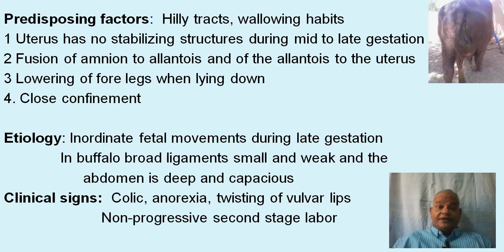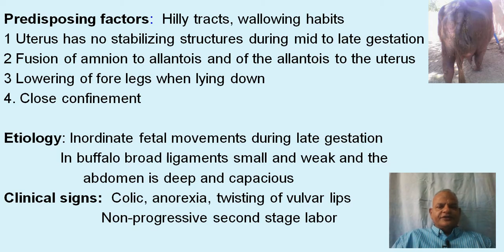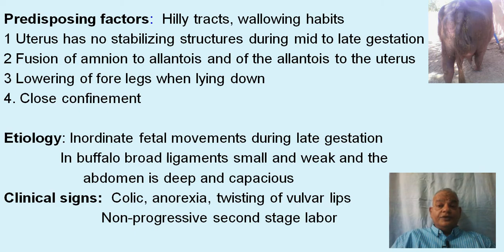The predisposing factors for uterine torsion include heavy drafts, the wallowing habits of the buffalo, and anatomy. The uterus has no stabilizing structures during mid to late gestation. The amnion is fused to the allantois, and the allantois is fused to the uterus, so fetal movements can move the allantois and thereby move the uterus. Additionally, lowering of the forelegs when cows or buffalos are lying down, and close confinement, are contributing factors.